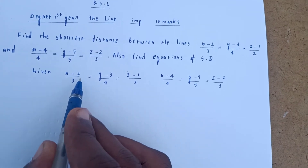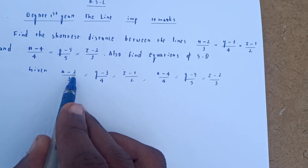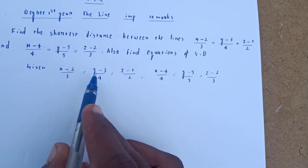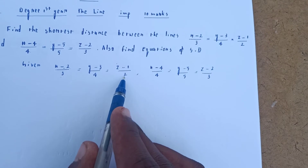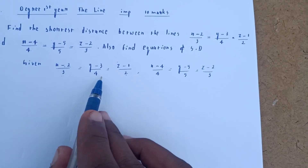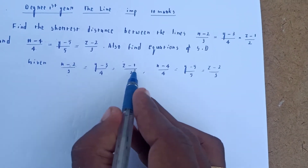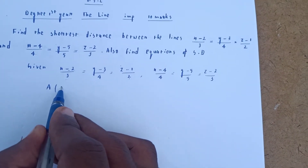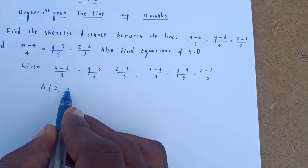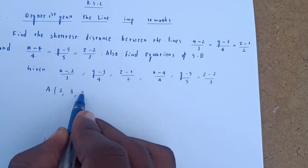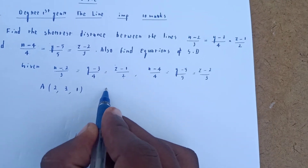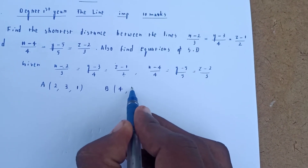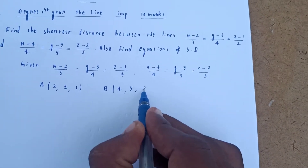We write this in the form (x−x1)/a = (y−y1)/b = (z−z1)/c. We take unit DRs and point. For the first line, the point is (x1, y1, z1) = (2, 3, 1). For the second line, the point is (4, 5, 2).